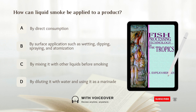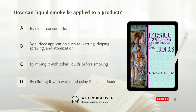How can liquid smoke be applied to a product? A. By direct consumption. B. By surface application, such as sweating, dipping, spraying, and atomization. C. By mixing it with other liquids before smoking. D. By diluting it with water and using it as a marinade. Answer: B. By surface application, such as sweating, dipping, spraying, and atomization.